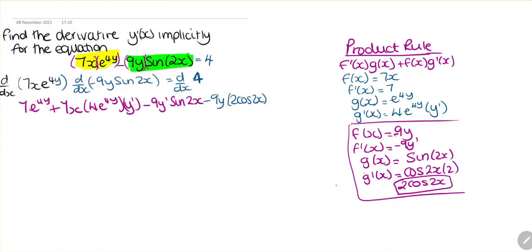This is equal to — if we take the derivative of 4, that's going to be 0. Now we need to see what we can simplify. I can see here I have 2 and minus 9y, so this is going to be minus 18y cosine of 2x, and all of this equals 0.